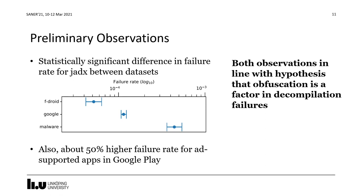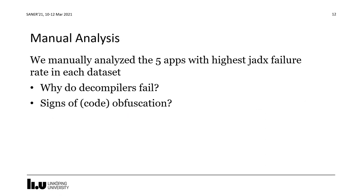To gain further insights and confirm these suspicions, we performed a number of additional analyses. I will discuss the manual analysis here — you can read about the identifier analysis in the paper. For the manual analysis, we selected the five apps with the highest JADX failure rates in each dataset and tried to understand why the decompiler failed and whether we could find signs of code obfuscation.